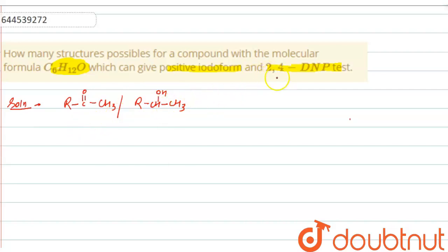And let's see which compound gave 2,4 DNP test and what is 2,4 DNP test. So, 2,4 DNP is a molecule with a structure of benzene.